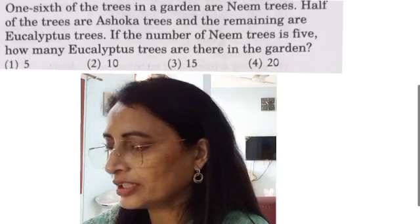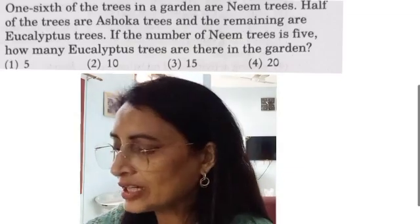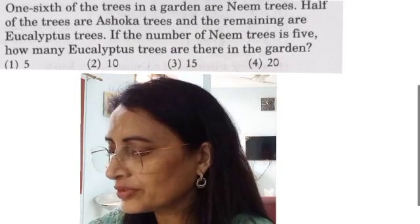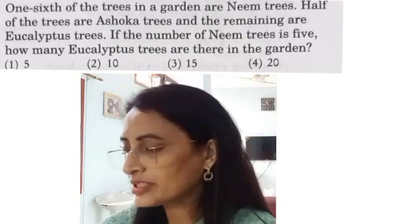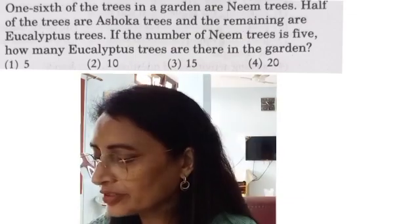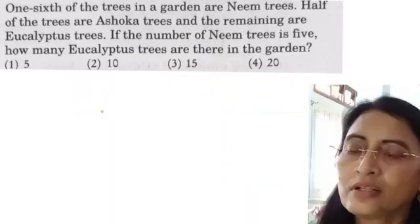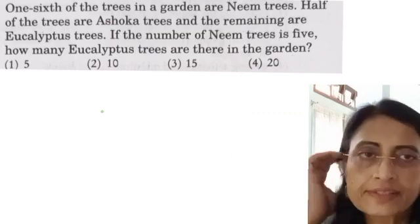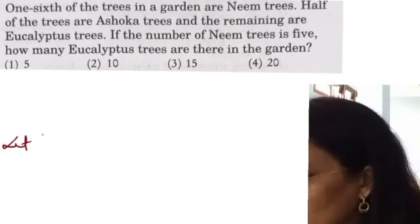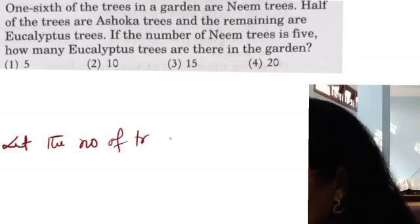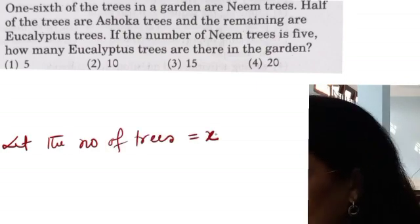One sixth of the trees in a garden are neem trees. Half of the trees are Ashoka trees, and the remaining are Eucalyptus trees. If the number of neem trees is 5, how many Eucalyptus trees are there in the garden? Options given: 5, 10, 15, 20. Let the number of trees be X, a variable. Number of neem trees is 5, and one sixth of the trees are neem trees.